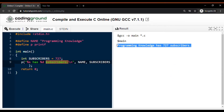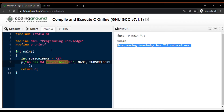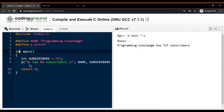Now let's see the use of typedef. Typedef is a keyword used in C language to assign alternative names to existing data types. It's mostly used with user-defined data types when the names of the data types become slightly complicated to use in programs. Following is the general syntax for using typedef. Let's take an example and see how typedef actually works.